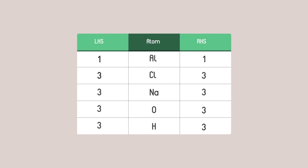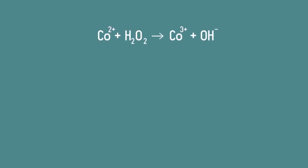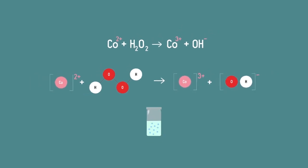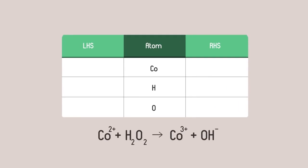If there are charges in a formula, these also need to be balanced. Look at this reaction for the oxidation of cobalt, for example. We can start off by balancing the atoms. Here is the table like the one we used before.